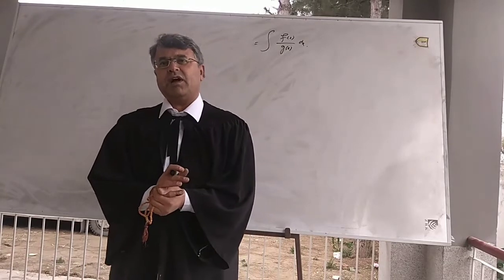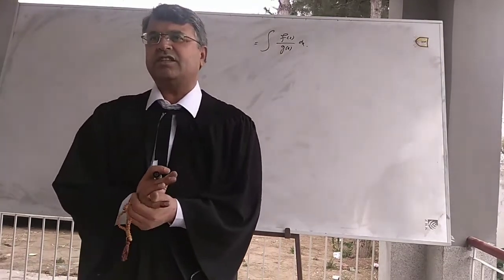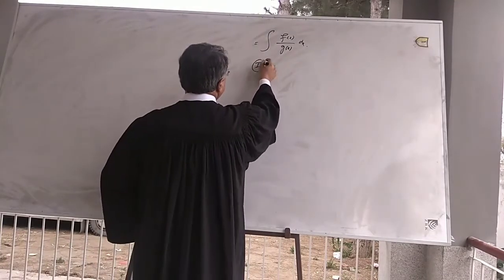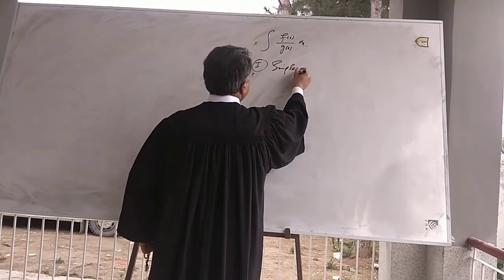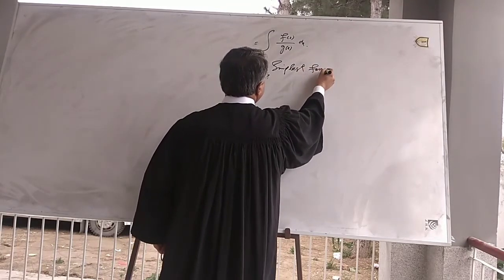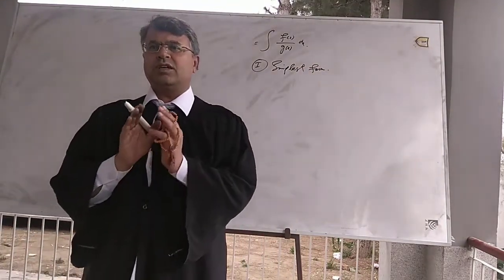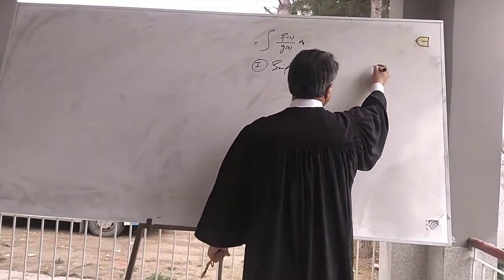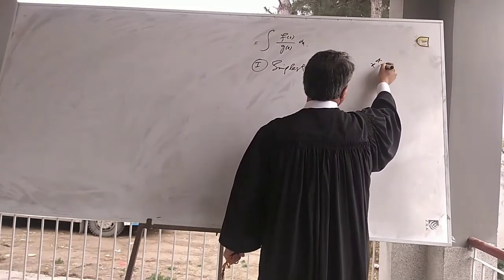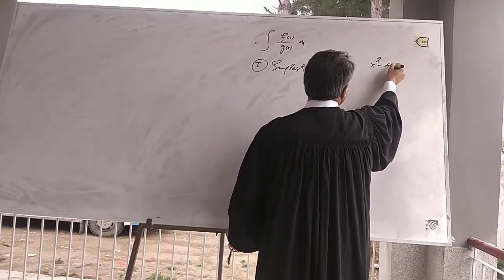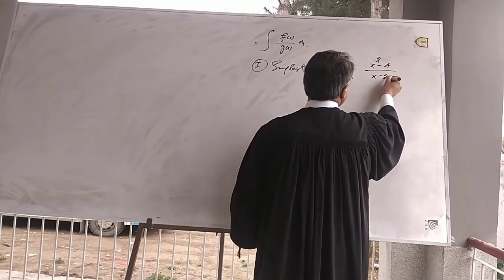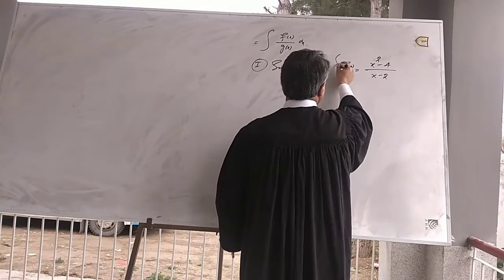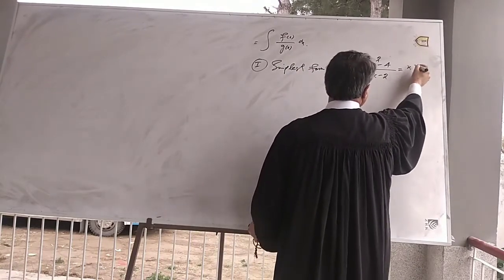When the function is in the form of f divided by g and we have to integrate this function, first we have to check that the function is in the simplest form. First we have to simplify the function which is in the form of f divided by g. For example, the function is x squared minus 4 divided by x minus 2, which is in the form of f(x) divided by g(x). We simplify this function.